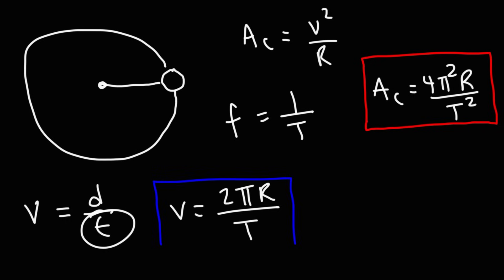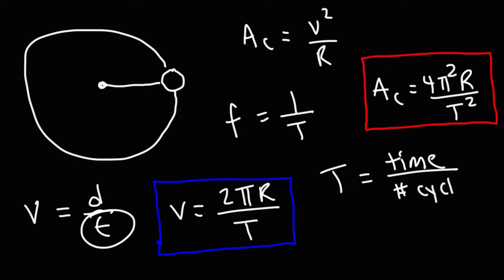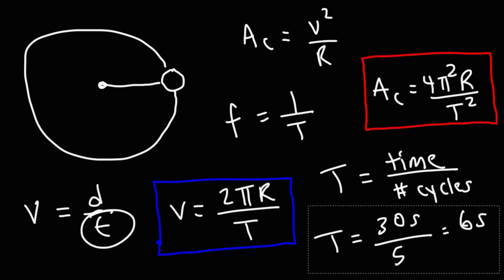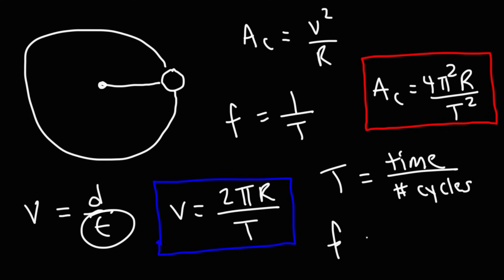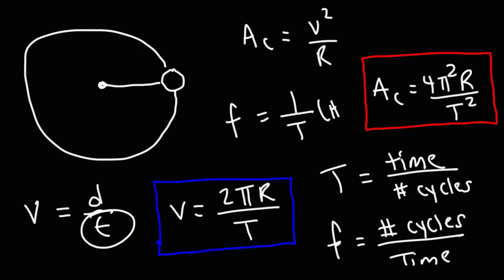If you know the period, you can also calculate the velocity using the formula v = 2πr/T. The period is equal to the time divided by the number of cycles. For instance, if it takes 30 seconds for an object to make 5 revolutions, the period would be 30 divided by 5, which is 6 seconds per cycle. The frequency is the reciprocal — it's the number of cycles divided by the time — and it's measured in hertz, or 1 over seconds.